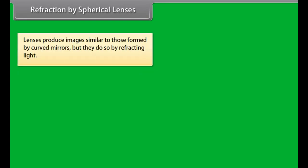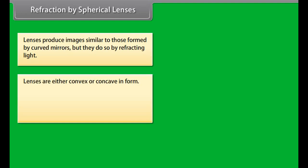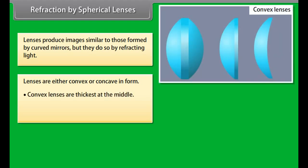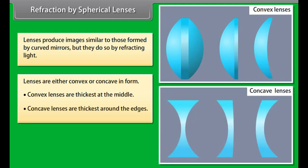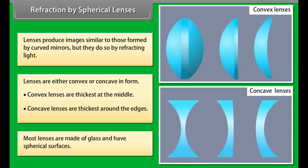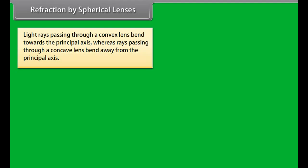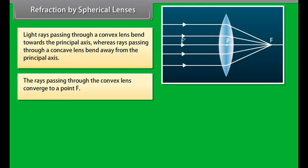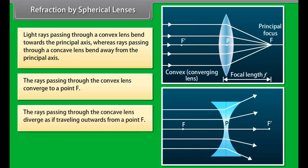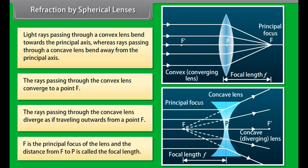Refraction by spherical lenses: Lenses produce images similar to those formed by curved mirrors, but by refracting light. Lenses are either convex or concave. Convex lenses are thickest at the middle; concave lenses are thickest around the edges. Most lenses are made of glass with spherical surfaces. Light rays passing through a convex lens bend towards the principal axis and converge to a point F, while rays through a concave lens diverge as if travelling outward from a point F. F is the principal focus, and the distance from F to the optical center P is the focal length.